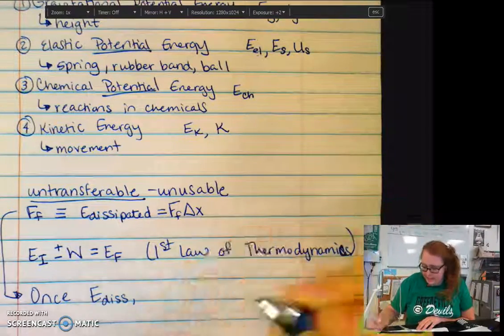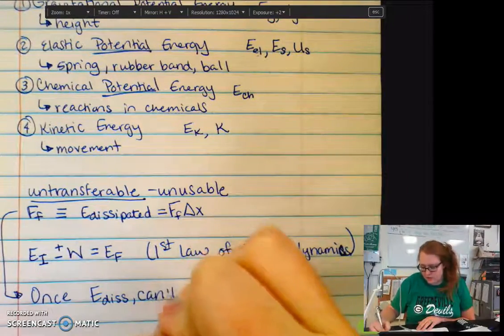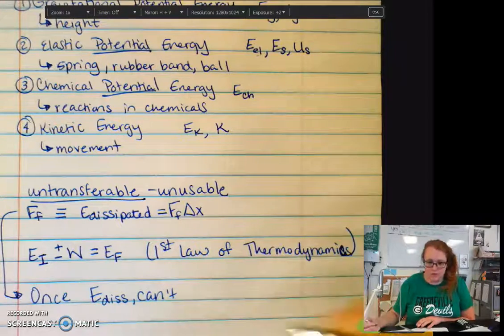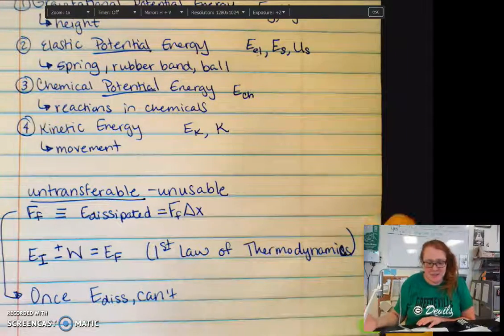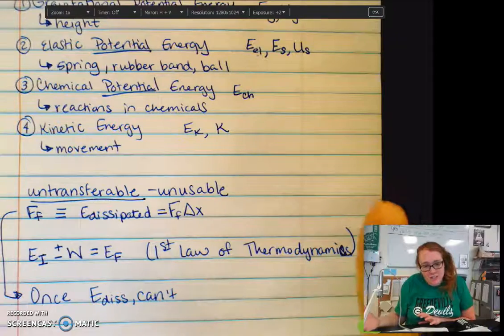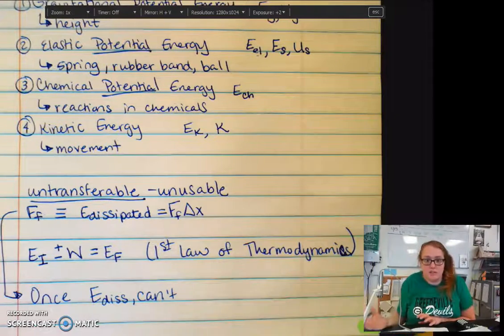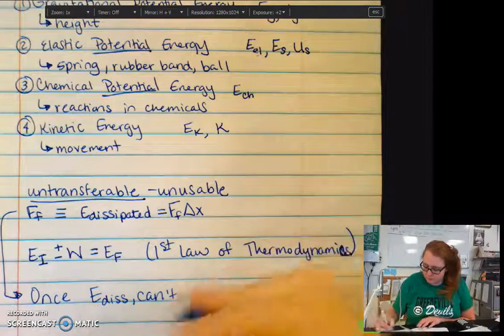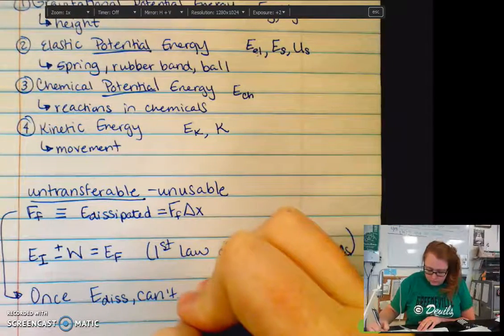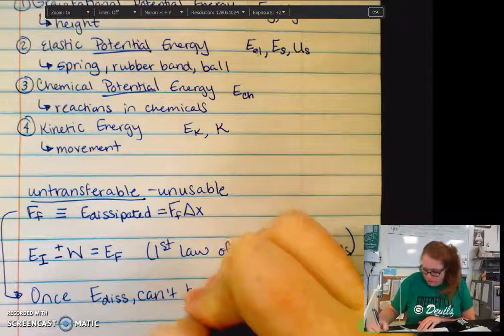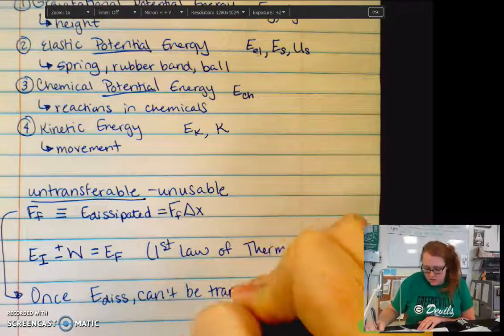Once you have energy just dissipated, it can't be transferred back to useful energy. For example, if a car skids to a stop, friction stopped it. You can't reverse that process. So it can't be transferred back to useful energy.